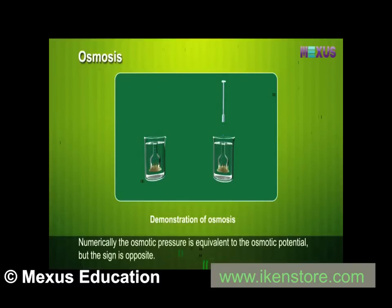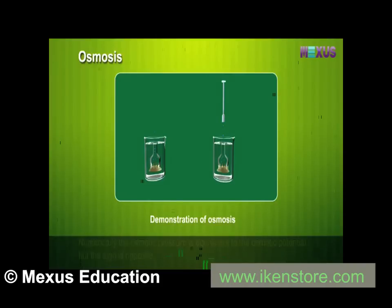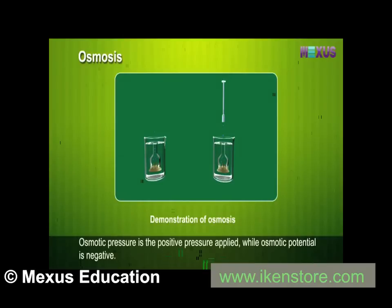External pressure can be applied from the upper part of the funnel such that no water diffuses into the funnel through the membrane. This pressure required to prevent water from diffusing is the osmotic pressure. Numerically, the osmotic pressure is equivalent to the osmotic potential, but the sign is opposite — osmotic pressure is the positive pressure applied, while osmotic potential is negative.